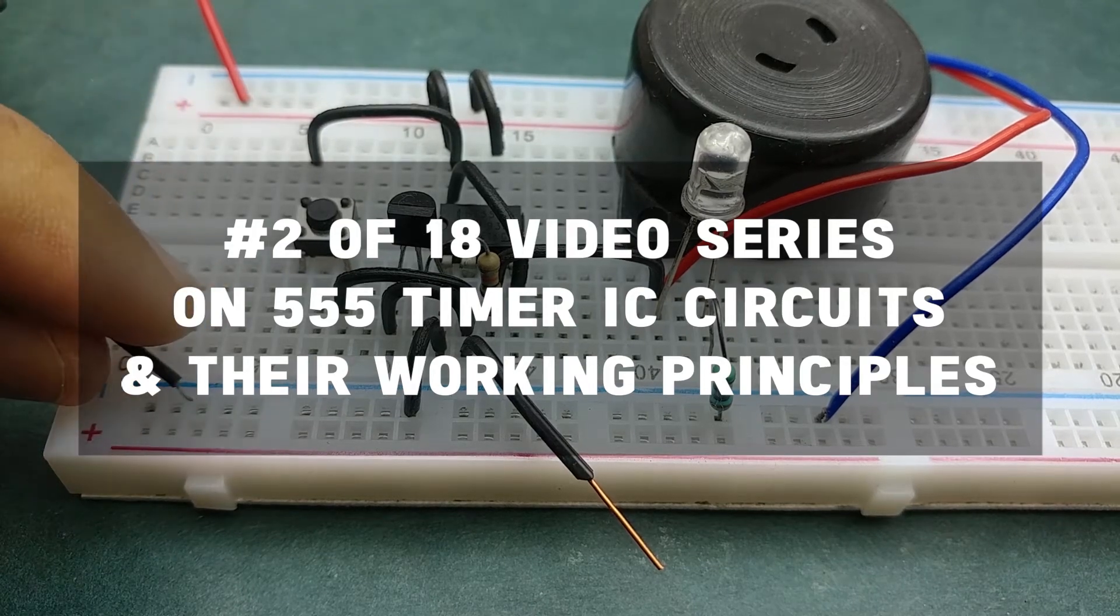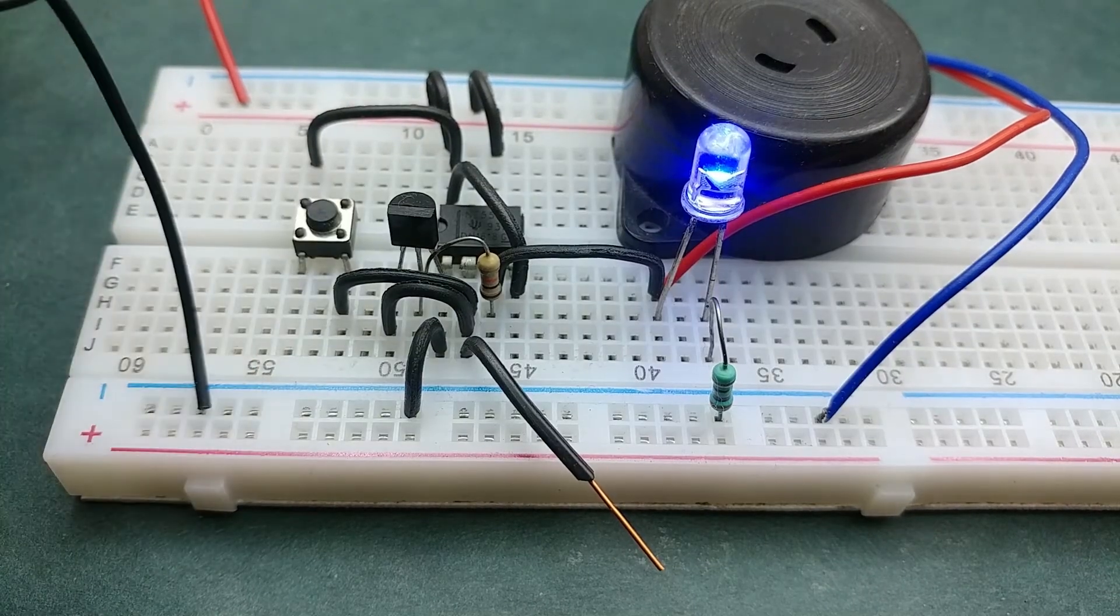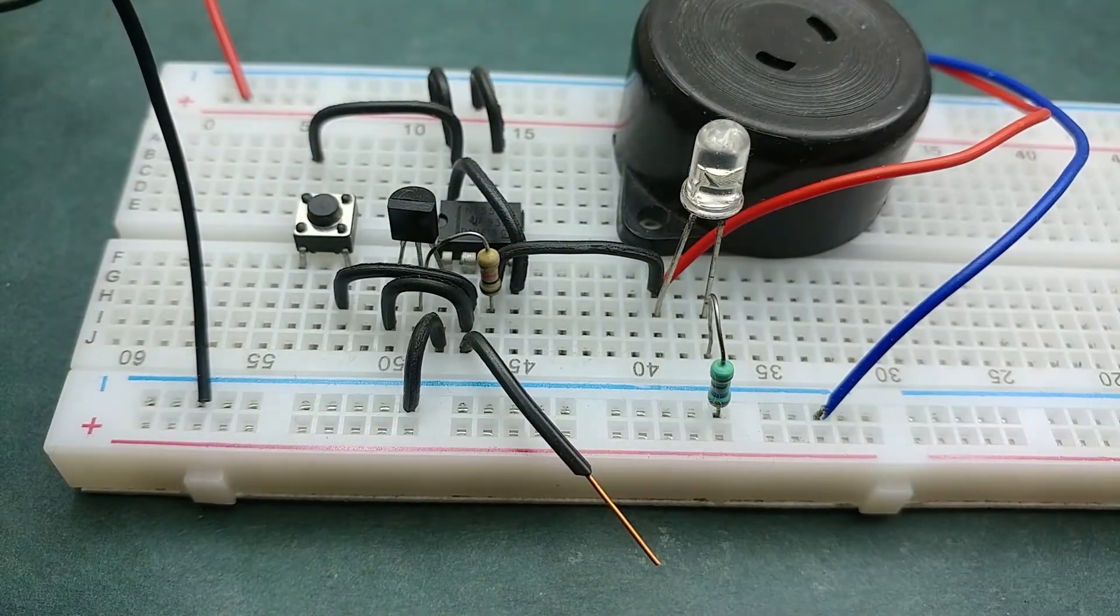Hi, welcome to Elonics. In this episode, we'll make a touch alarm circuit on a breadboard using 555 timer IC.